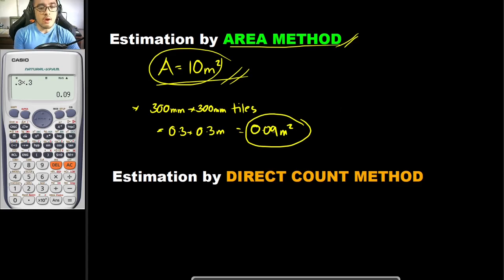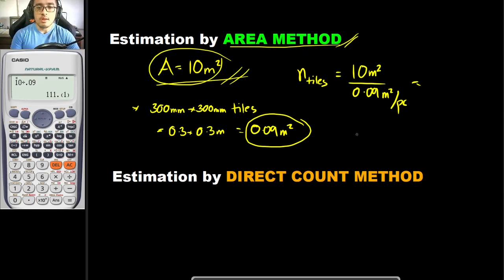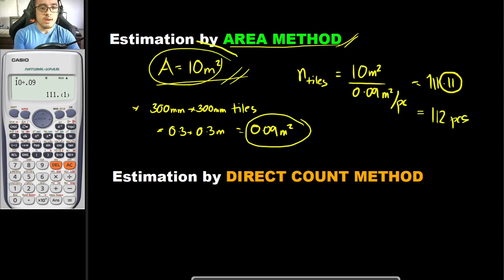To determine how many 0.09 square meters are there in 10 square meters, we would just be dividing it. So the number of tiles is equal to 10 square meters divided by 0.09 square meters per piece. Dividing such, we would get 111.11. But since we cannot buy a fractional part of a tile, we would be rounding it up to 112. So we approximately need 112 pieces of tiles to cover this area.